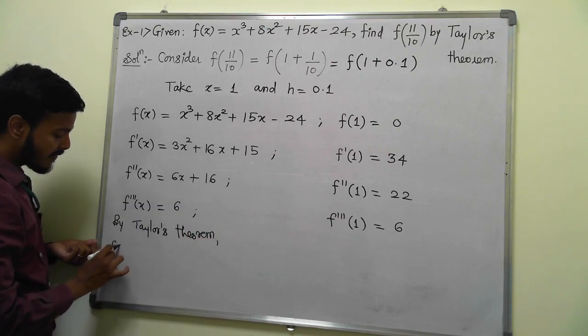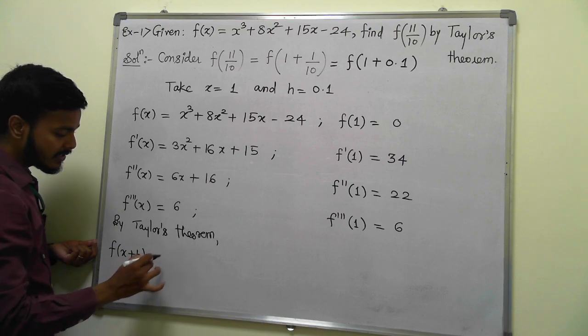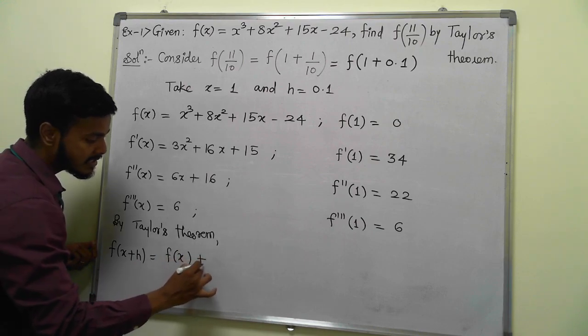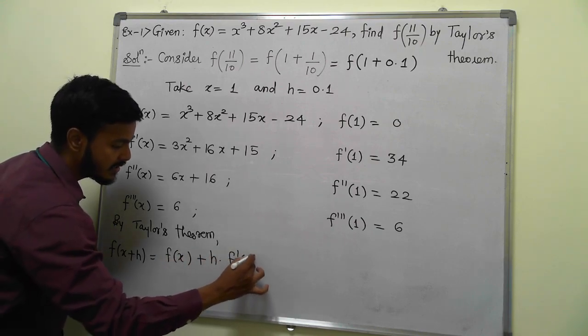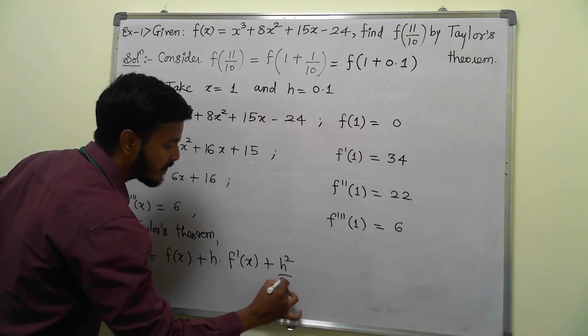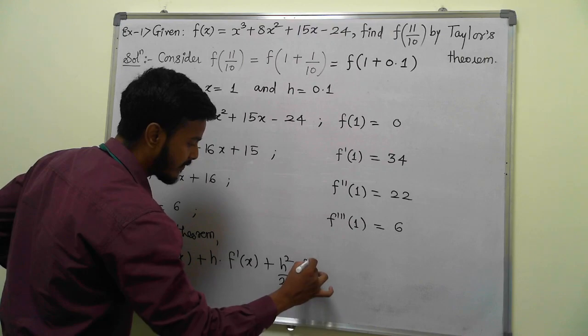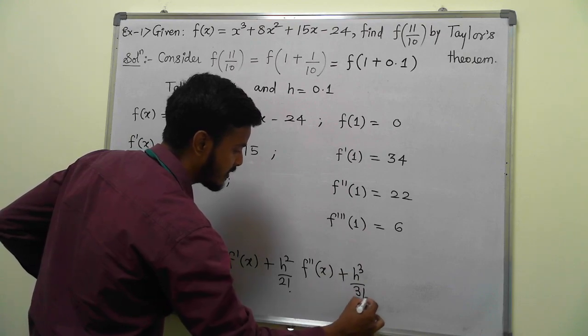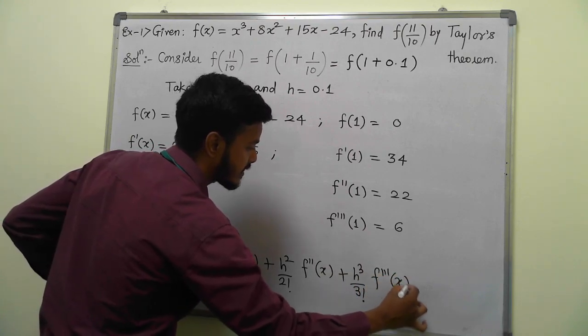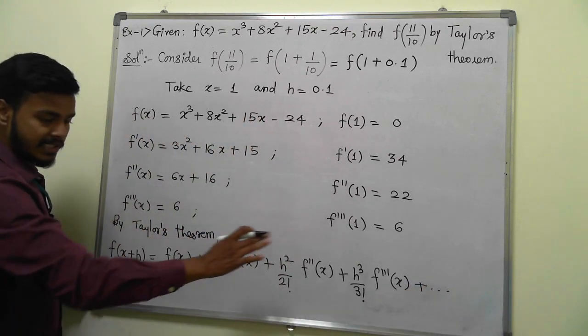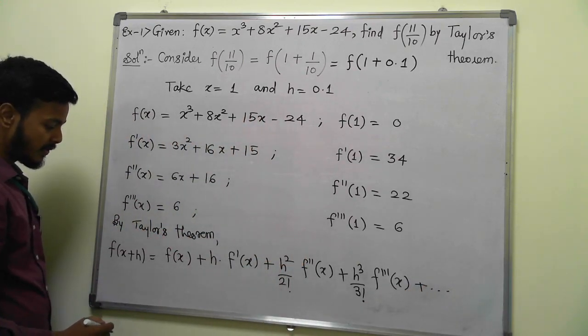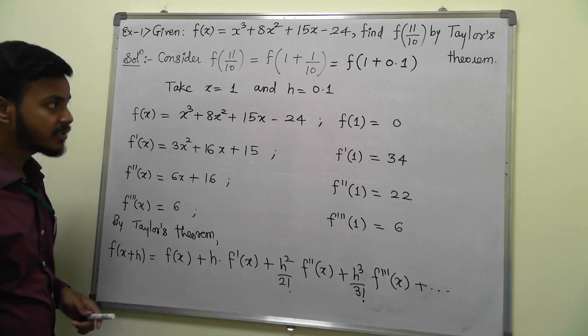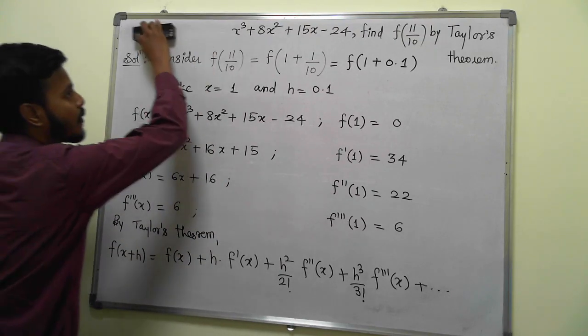f(x+h) = f(x) + h·f'(x) + (h²/2!)·f''(x) + (h³/3!)·f'''(x), and other derivatives are 0, so I'm not writing the remaining terms. Now you have the value of x and h. Substitute. I'm removing this problem question now.